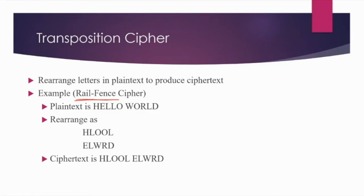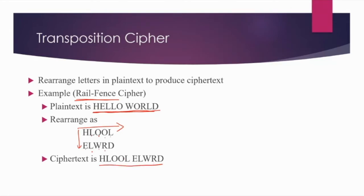The algorithm behind rail fence cipher: suppose we have the plain text 'hello world'. Rail fence cipher says you can transpose these words by writing them top to bottom in a diagonal fashion. So I am writing H-E-L-L-O-W-O-R-L-D from left to right and top to down. Whatever we get as output becomes the cipher text. The algorithm is: rearrange the words from top to down and left to right.